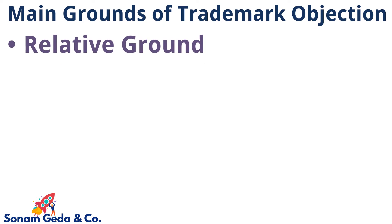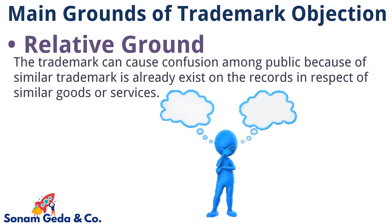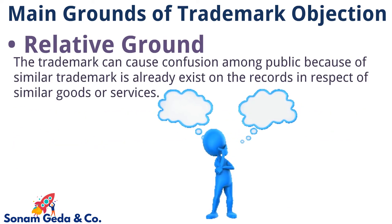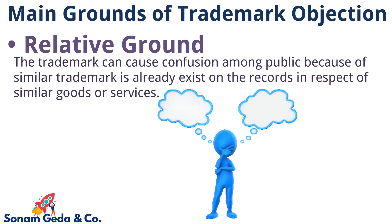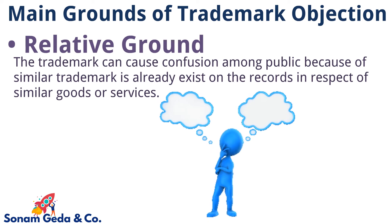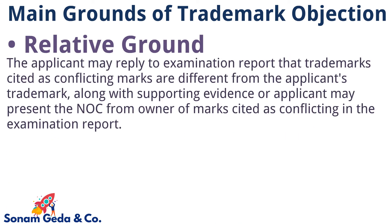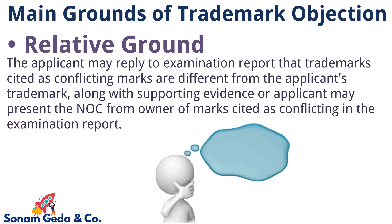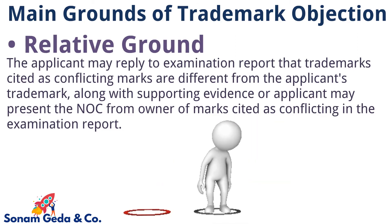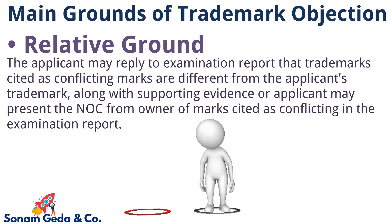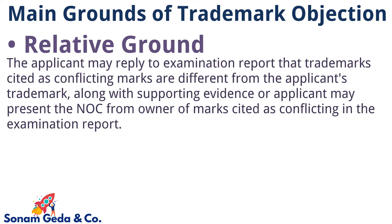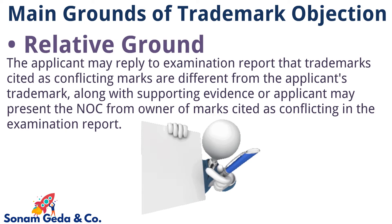Relative Grounds: The trademark can cause confusion among the public because a similar trademark is already existing on the records in respect of similar goods or services. The applicant may reply to the examination report that trademarks cited as conflicting marks are different from the applicant's trademark, along with supporting evidence, or the applicant may present an NOC from the owner of marks cited as conflicting in the examination report.